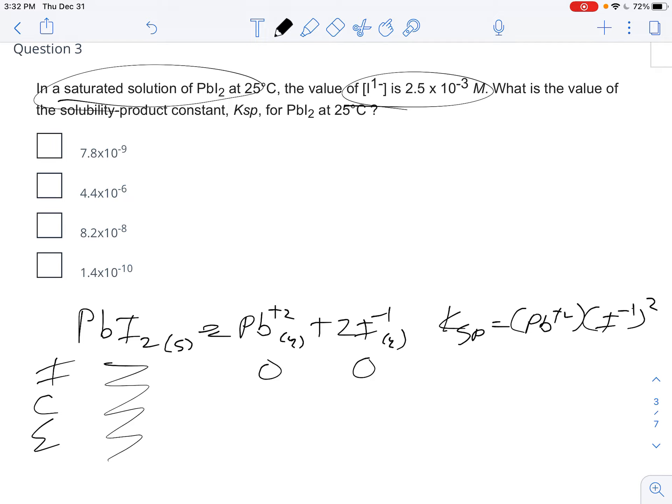That means this is 2.5 times 10 to the negative third, which means that it had to have gone up by 2.5 times 10 to the negative third.